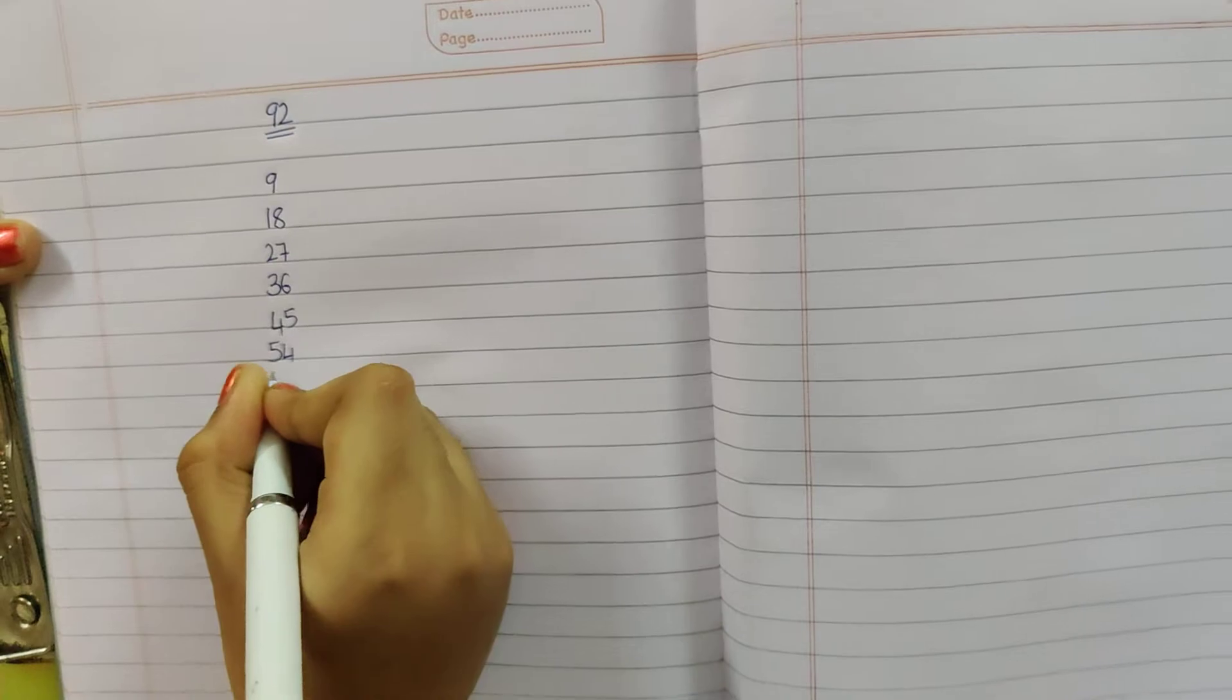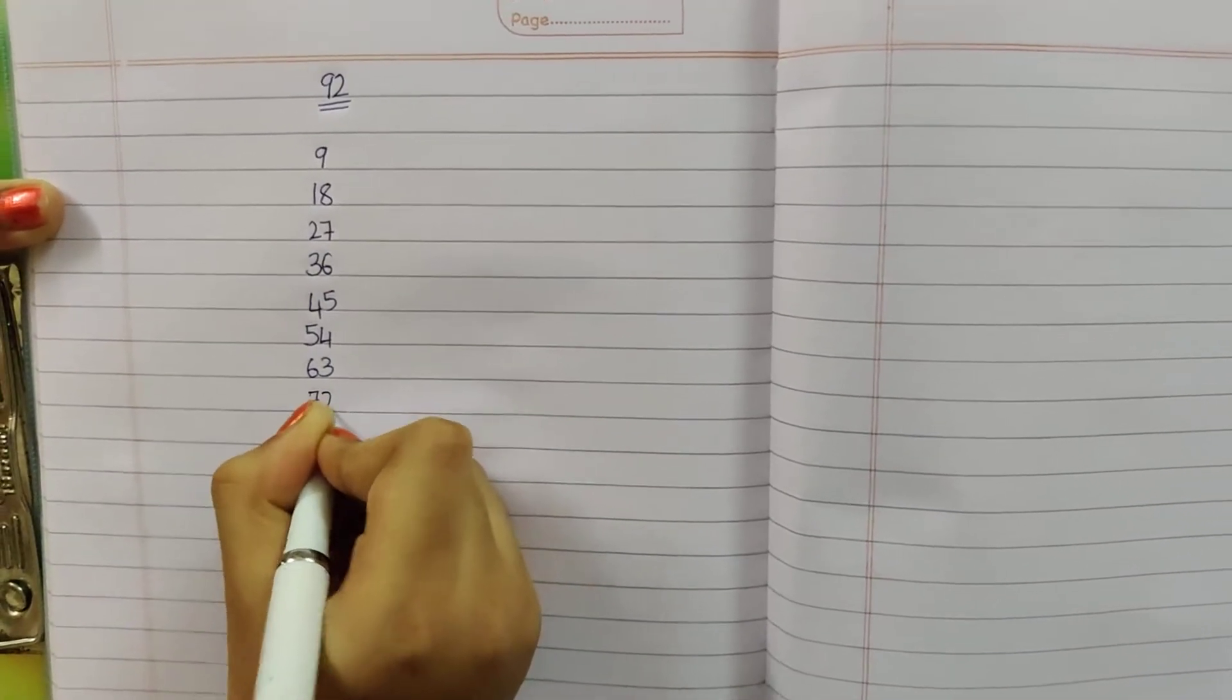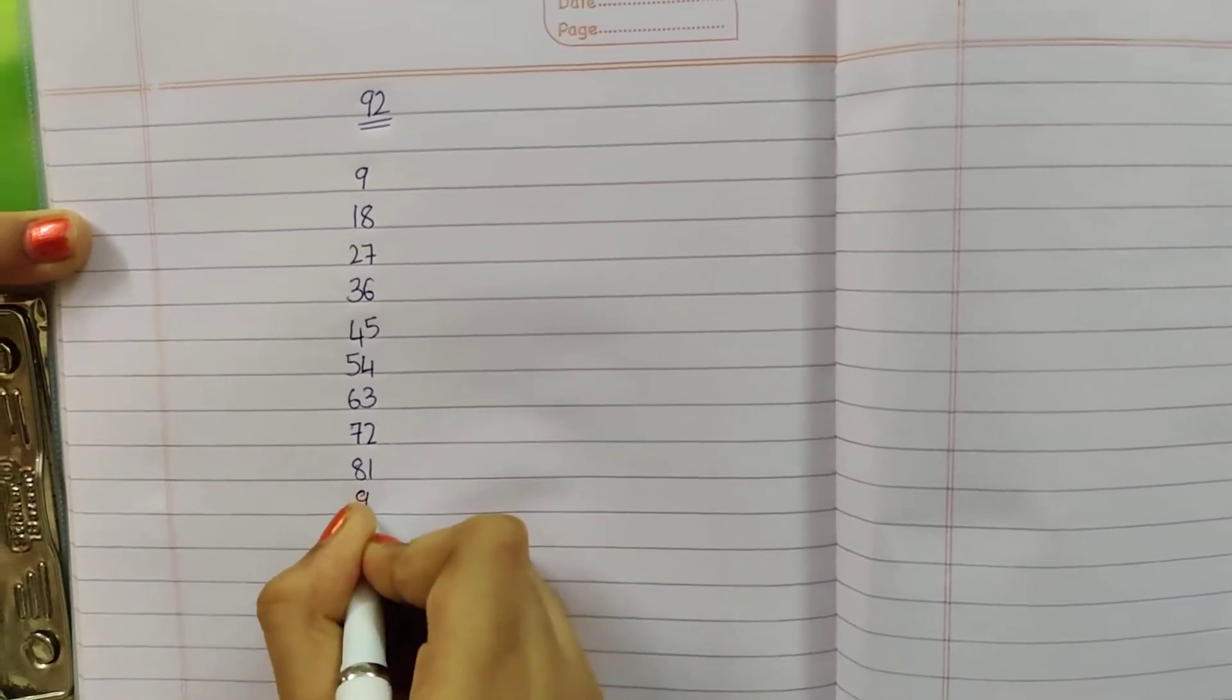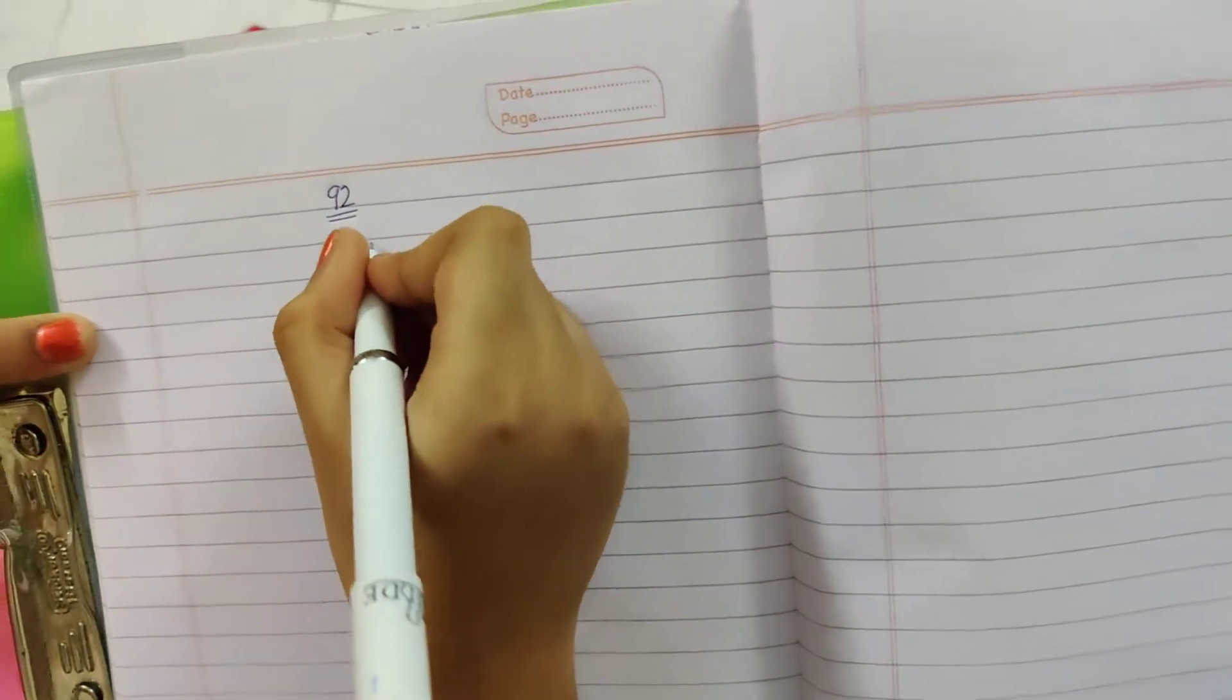54, 63, 72, 81 and 90. Now write the multiples of 2.